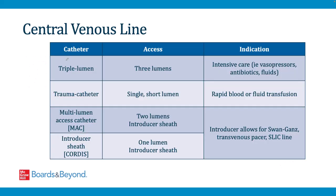There are multiple types of central line catheters. In the medical ICU, the most common is a triple lumen catheter, which has 3 lumens for vasopressors, antibiotics, sedation, and fluids. A trauma catheter is a single short lumen line allowing extremely rapid fluid or blood delivery. A MAC line (multi-lumen access catheter) has 2 lumens plus an introducer sheath, which allows placement of specialty equipment like a Swan-Ganz catheter or transvenous pacing wire. A slick line can be placed into a sheath to create an additional lumen for fluids and medications.